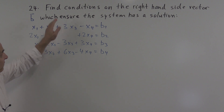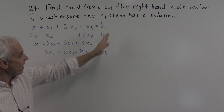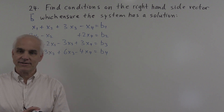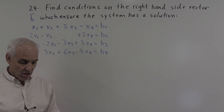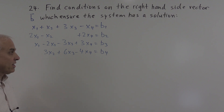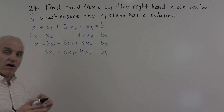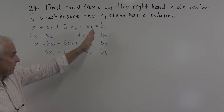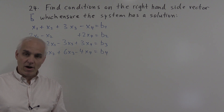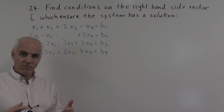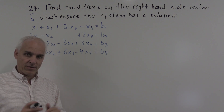So the question is to find conditions on the right-hand side vector b which ensure the system has a solution. We're going to adopt the usual procedure — we're going to solve this system of equations, or start towards it, until we get to the stage where we can read off whether it has a solution or not. Throughout that, we're going to treat these variables b1 up to b4 just as we would numbers.